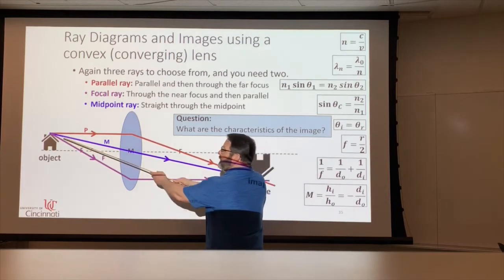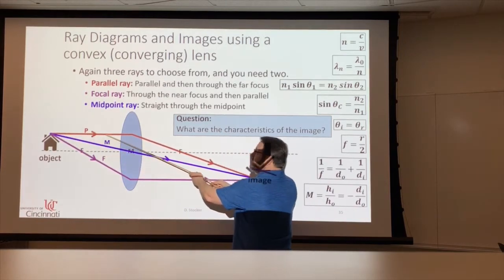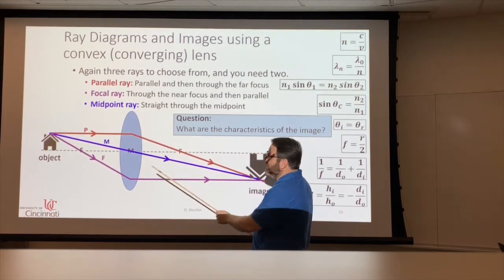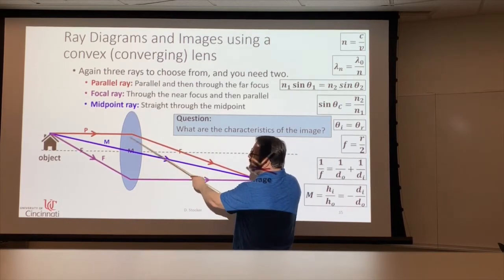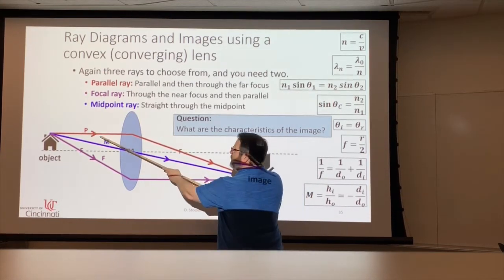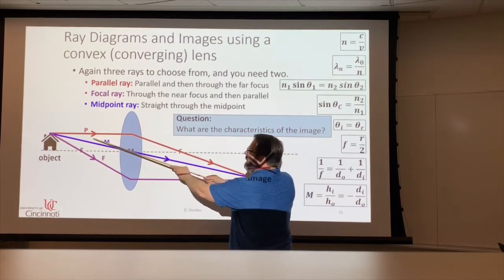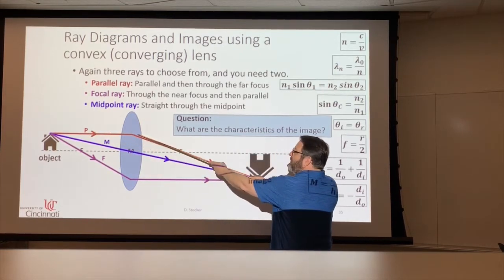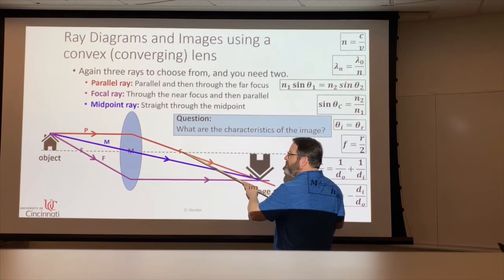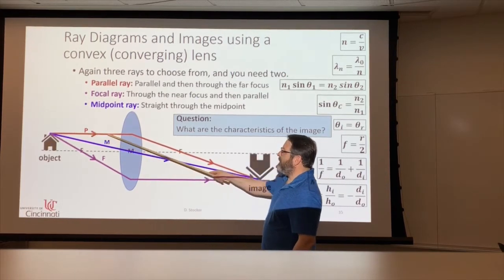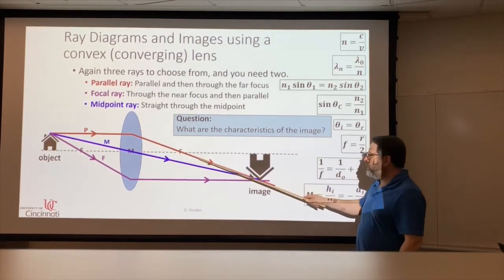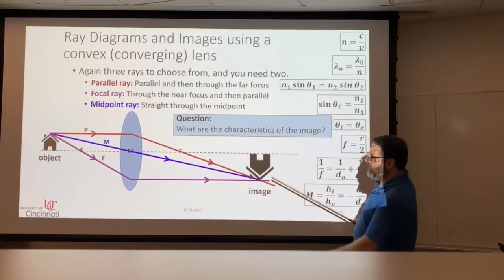So if you come in parallel, then just the same way as with the mirror. This time when you get to the midpoint of the lens instead of the surface of the mirror. So when you get to the midpoint of the lens, any light that came in parallel gets focused down to the focal point. So we draw it that way. So the light comes into the lens, goes through the focal point and out however far you need to go.